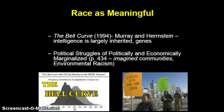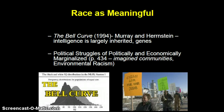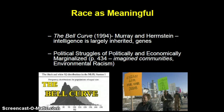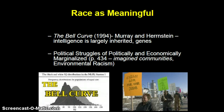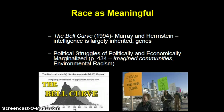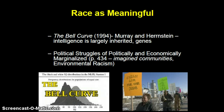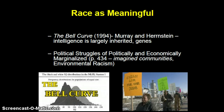Now, to say that race is biologically meaningless is not to say that it's not meaningful. Indeed, in 1994, Murray and Hernstein's piece on the bell curve alleged that intelligence is largely inherited based on genes. At the same time, race can also be meaningful in the sense of political struggles of politically and economically marginalized communities, or imagined communities, as Benedict Anderson refers to them. This is the notion of environmental justice or environmental racism — the allegation that the siting of polluting industries is near communities of color, whether African-American, Latino communities, or Native American populations.